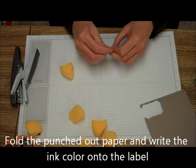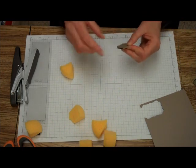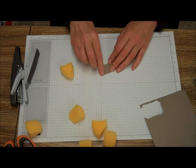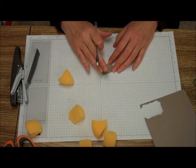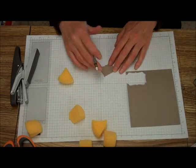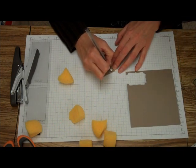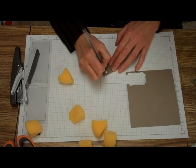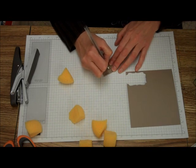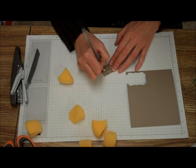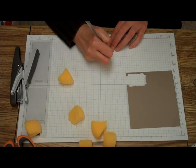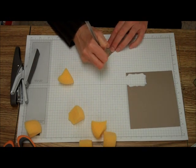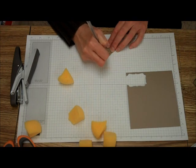Now, if you have one of those fancy label makers, you can make the label. I just write on it. This is our new color, Tip Top Taupe. So I go Tip Top Taupe, Tip Top Taupe.